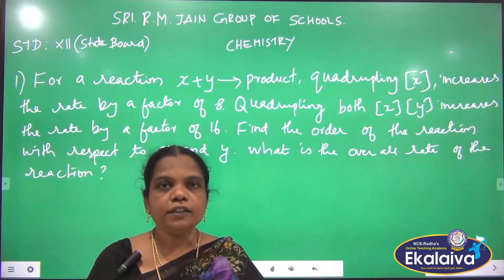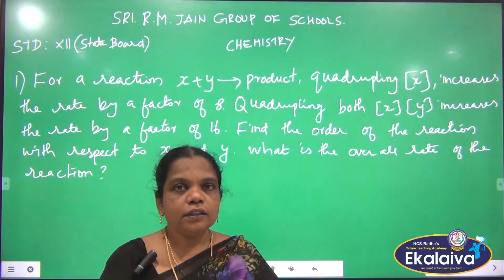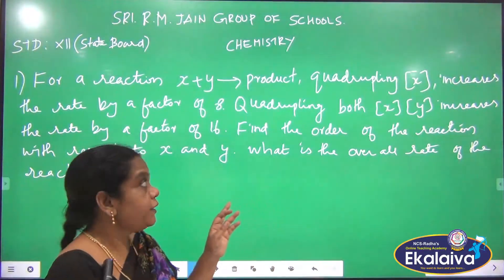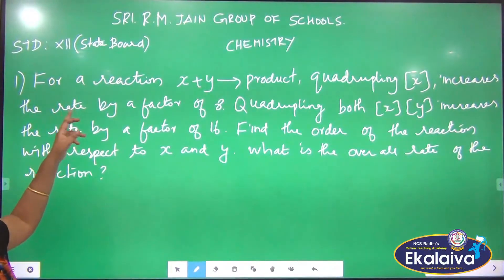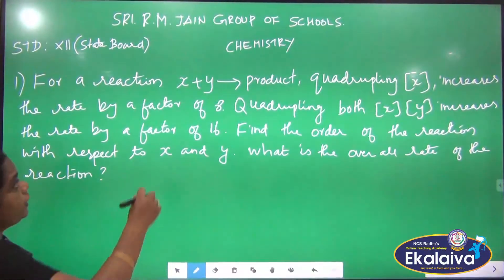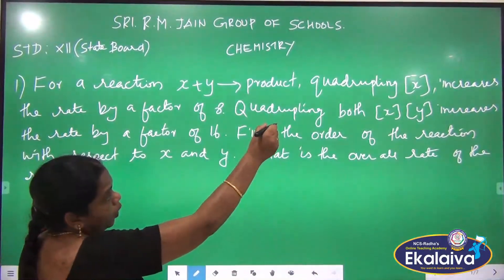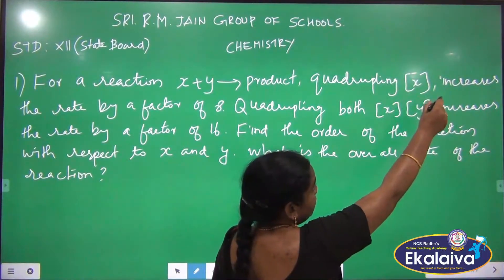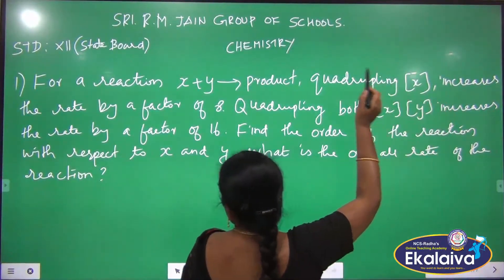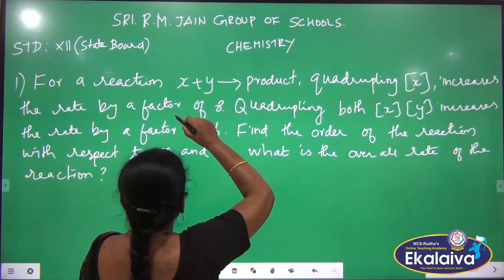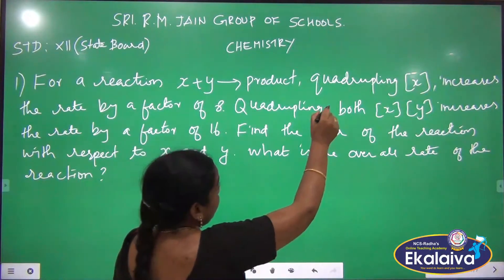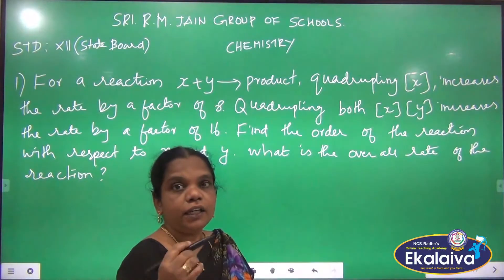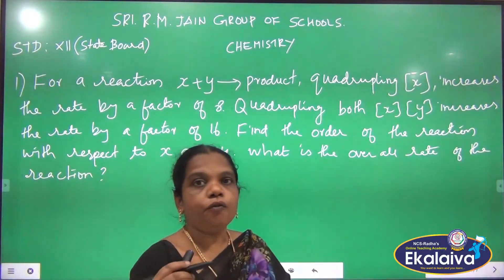Welcome to online class. Now we are going to learn about the rate of the given reaction. For the reaction X plus Y gives the product, the quadrupling of the concentration of X increases the rate by a factor — quadrupling means the rate of the reaction is increased by 4 times.